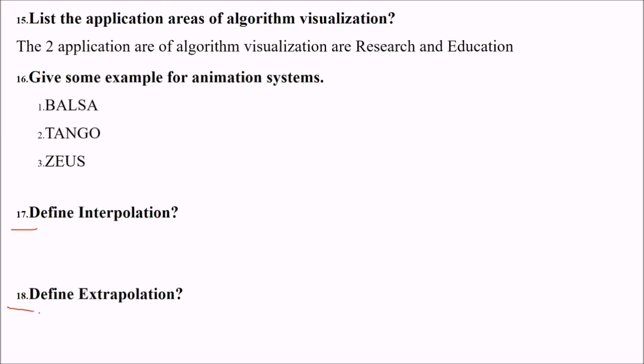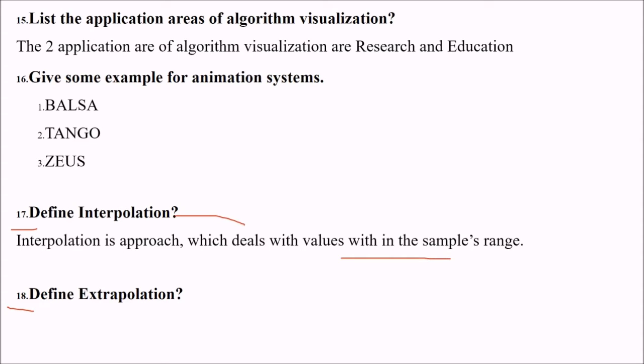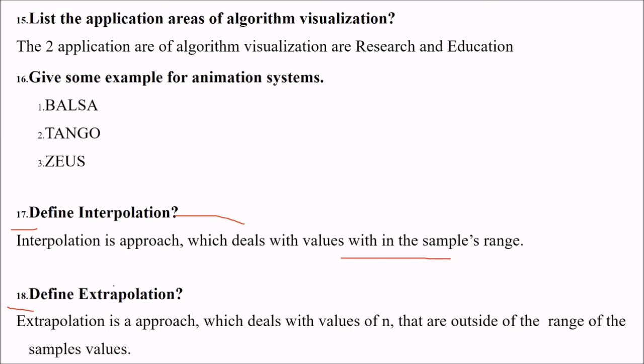Define interpolation and extrapolation. Interpolation deals with values within the samples range. Extrapolation deals with the value of n that are outside the range of the sample values. You have two values here, finding a value on the basis of these two values is interpolation. These two values are available with you and you want to find a value which is outside. Finding a value outside when you are provided with two values, this value is outside the range of these two values. Using this value to find out the value which is outside the range is extrapolation.